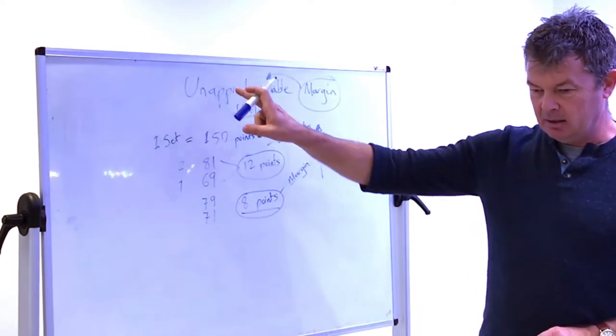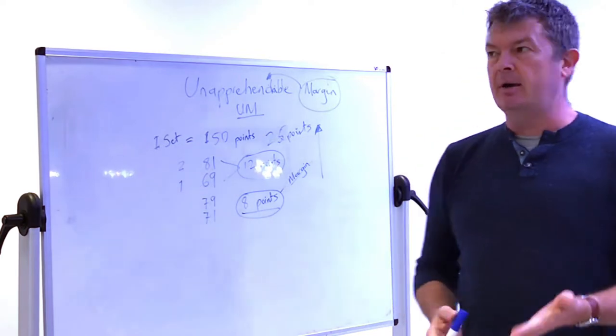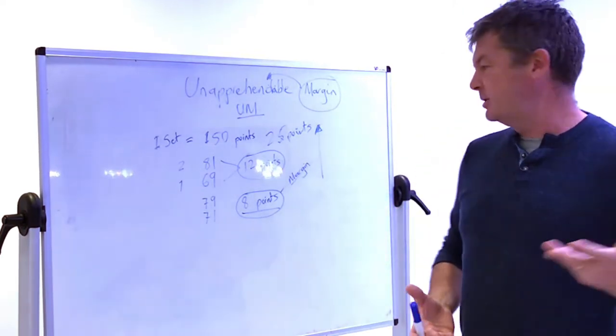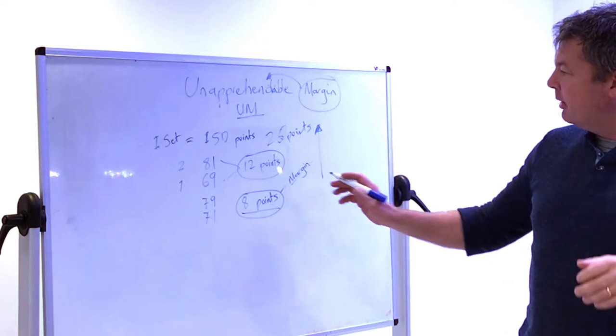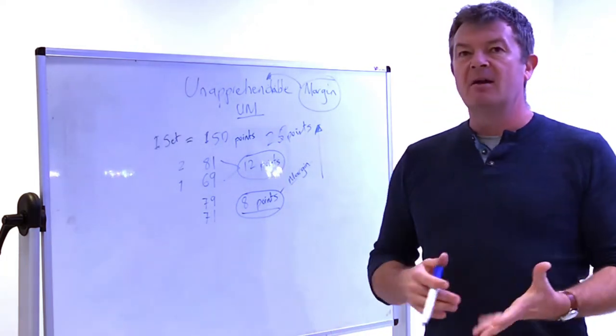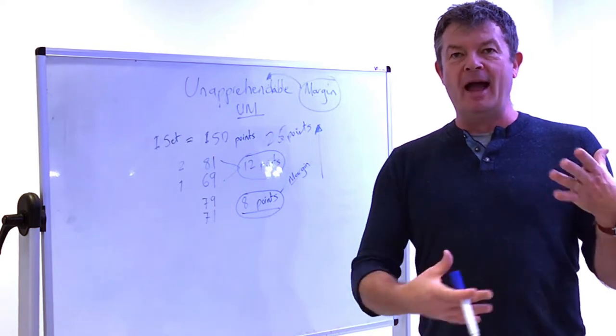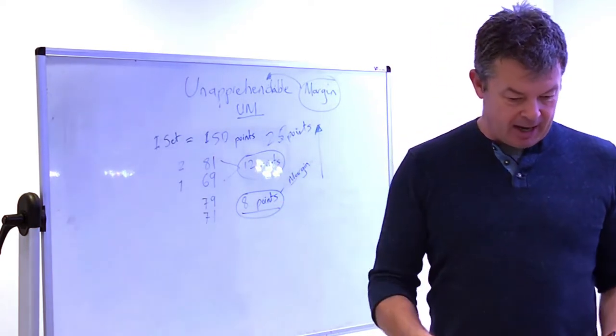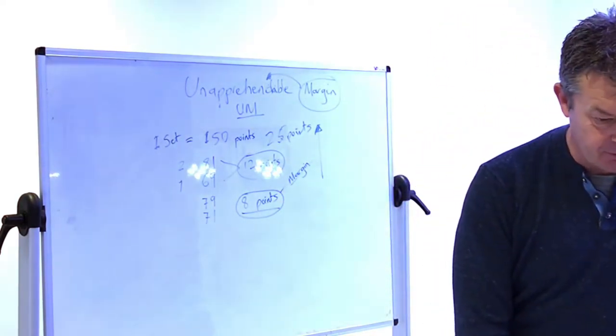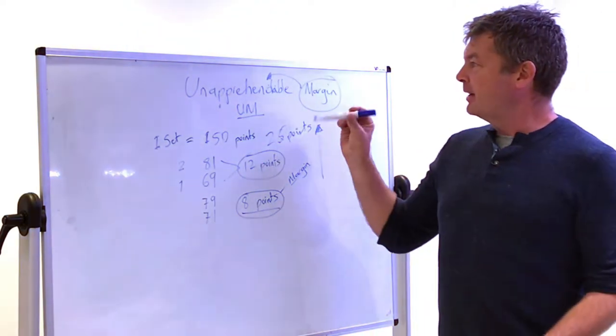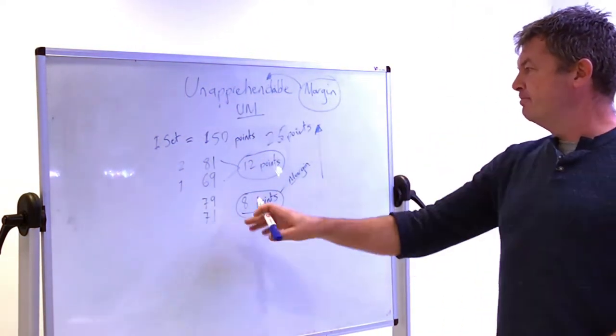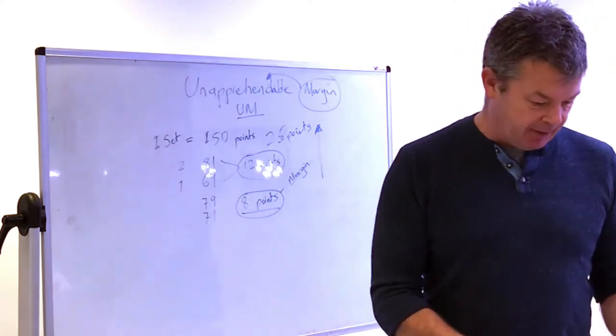You can't perceive eight point difference. Matches are much, much closer than players think. So the unapprehensible bit, you might know it propositionally, but you will never feel that, or know that in a kind of embedded way, on the tennis court.